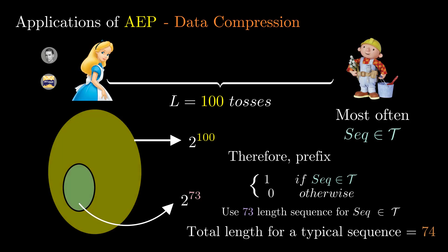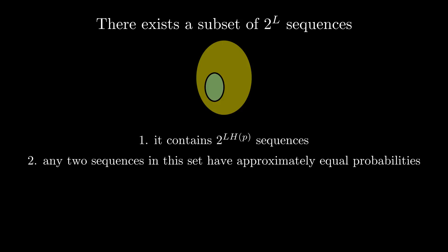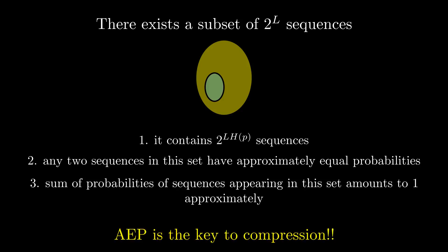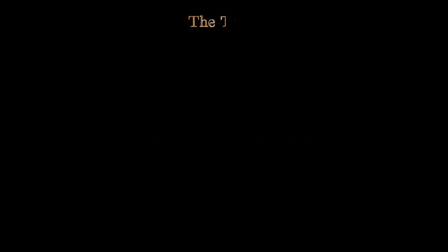Moreover, if Alice has to convey the outcomes of a larger number of tosses, this reduction in the number of bits is more pronounced. As a takeaway from this video: out of all possible 2^L sequences of length L, there exists a typical subset of 2^(LH) sequences where any two sequences have approximately equal probability and the sum of their probabilities amounts to approximately 1. We have also seen an application of AEP towards data compression.